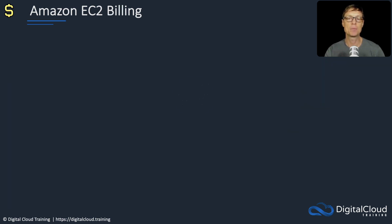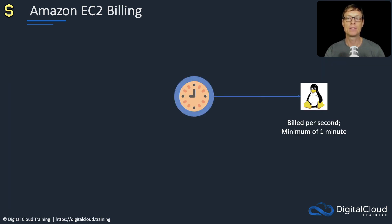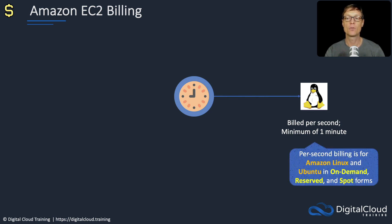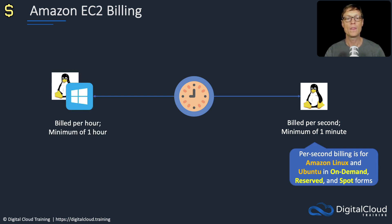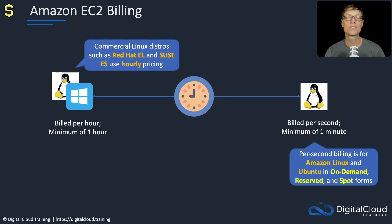Now let's look at how you actually get billed. You are billed per second with a minimum of one minute, and that's for Linux instances — specifically Amazon Linux and Ubuntu — in on-demand, reserved, and spot forms. We then have billing per hour with a minimum of one hour, which applies to Windows and other distributions such as commercial Linux distributions like Red Hat Enterprise Linux and SUSE Enterprise Server.